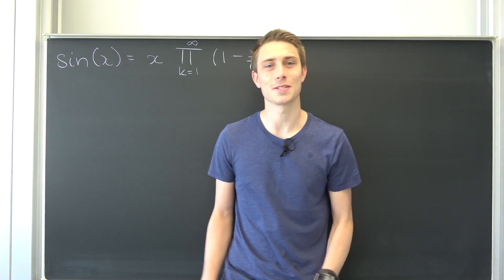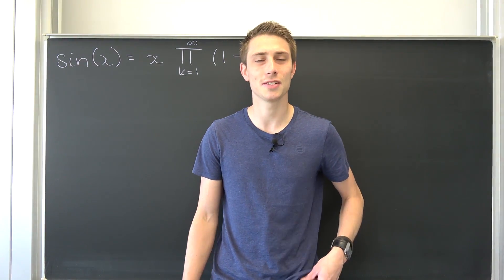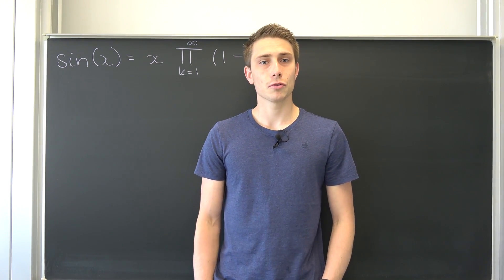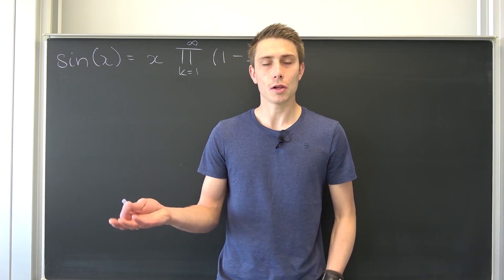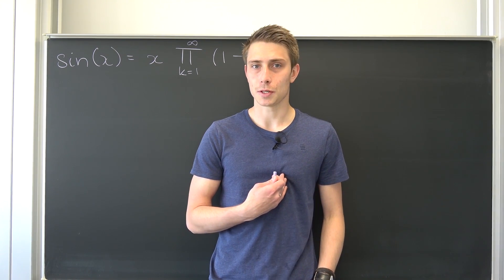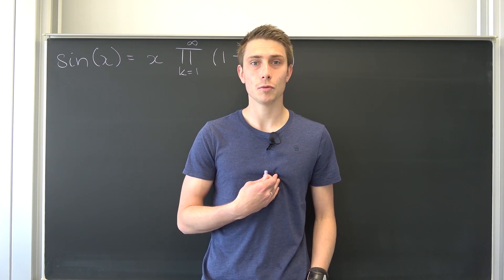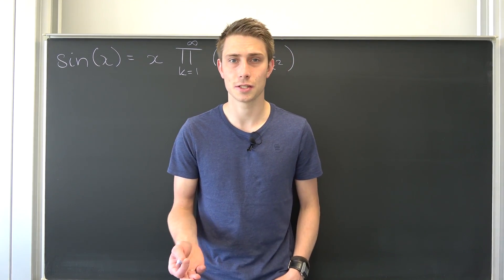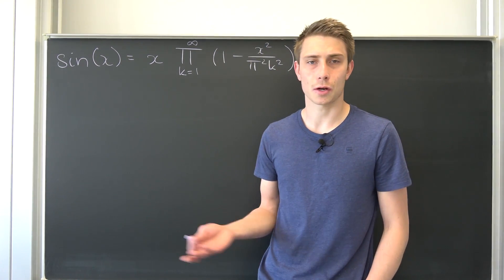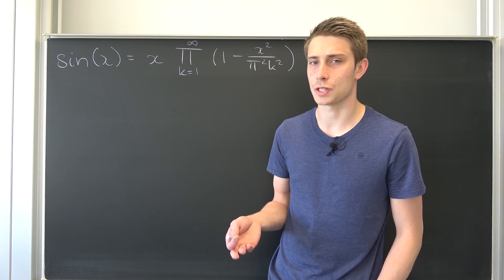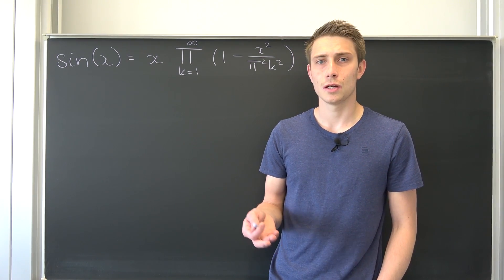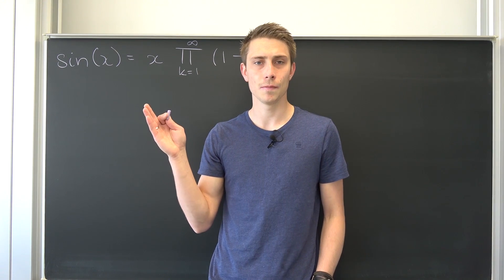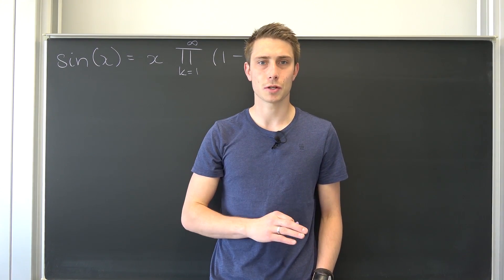Good morning fellow mathematicians, welcome back to another video. Today we're going to do something pretty cool. We are going to derive all the trigonometric identities — cosine, cotangent, tangent and so on — as infinite products. So that's what we are going to derive today, and it's going to be quite cool.